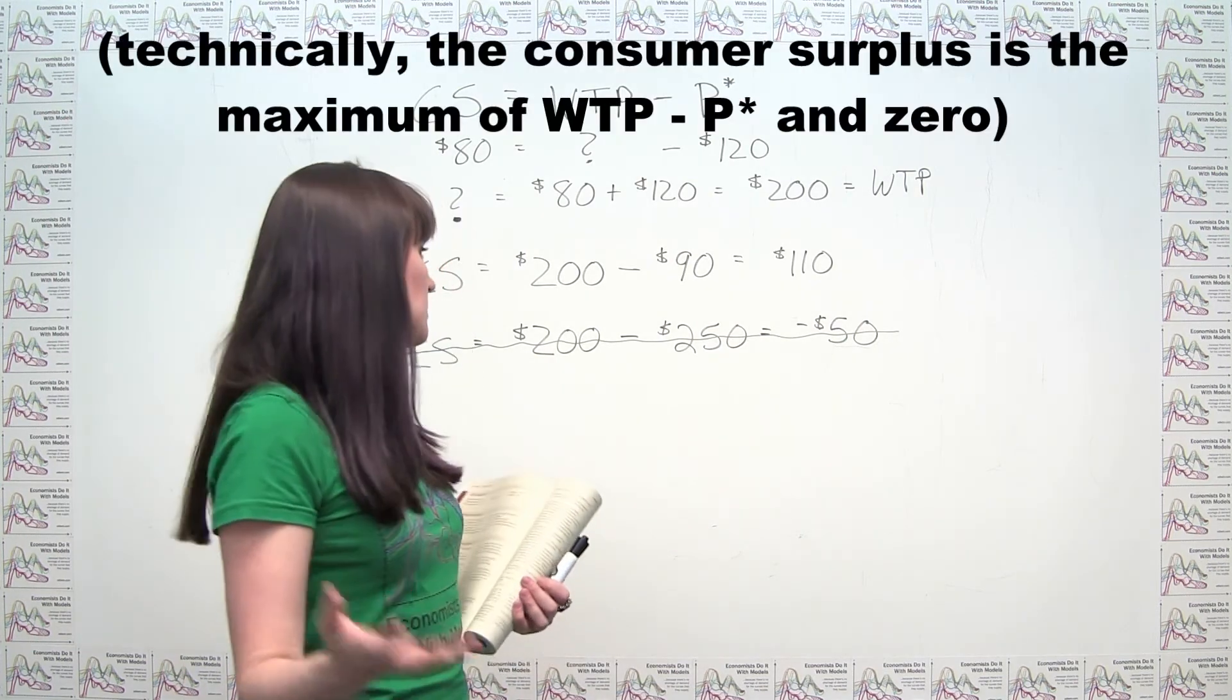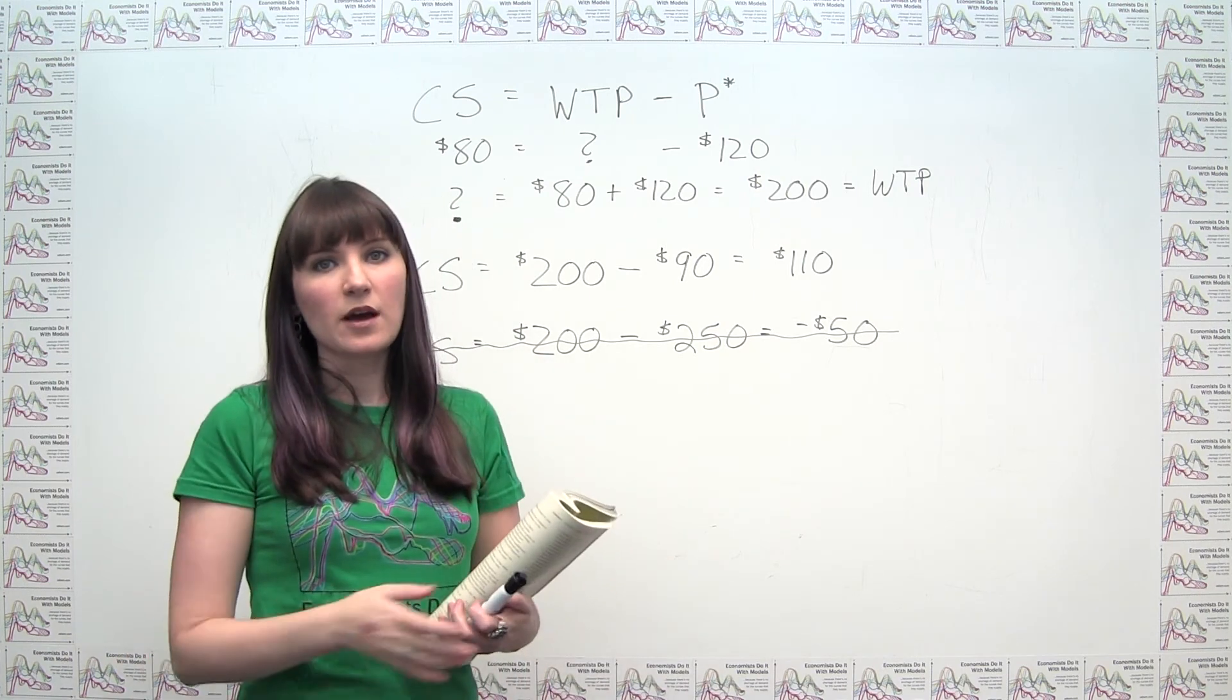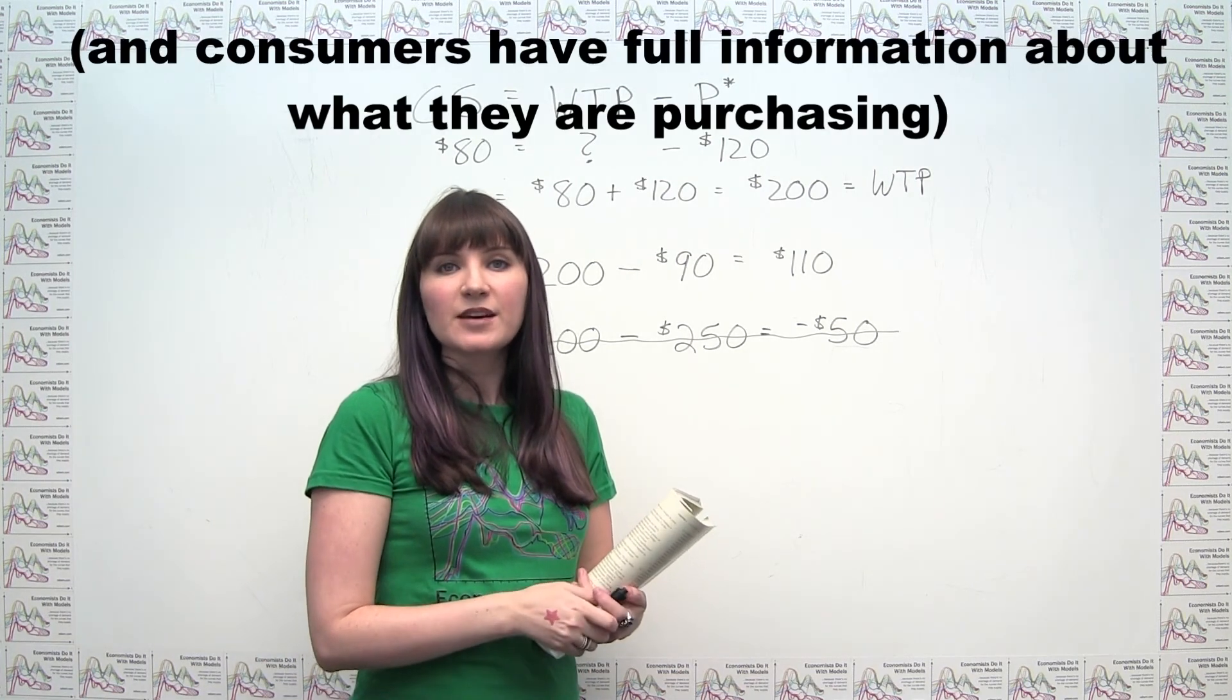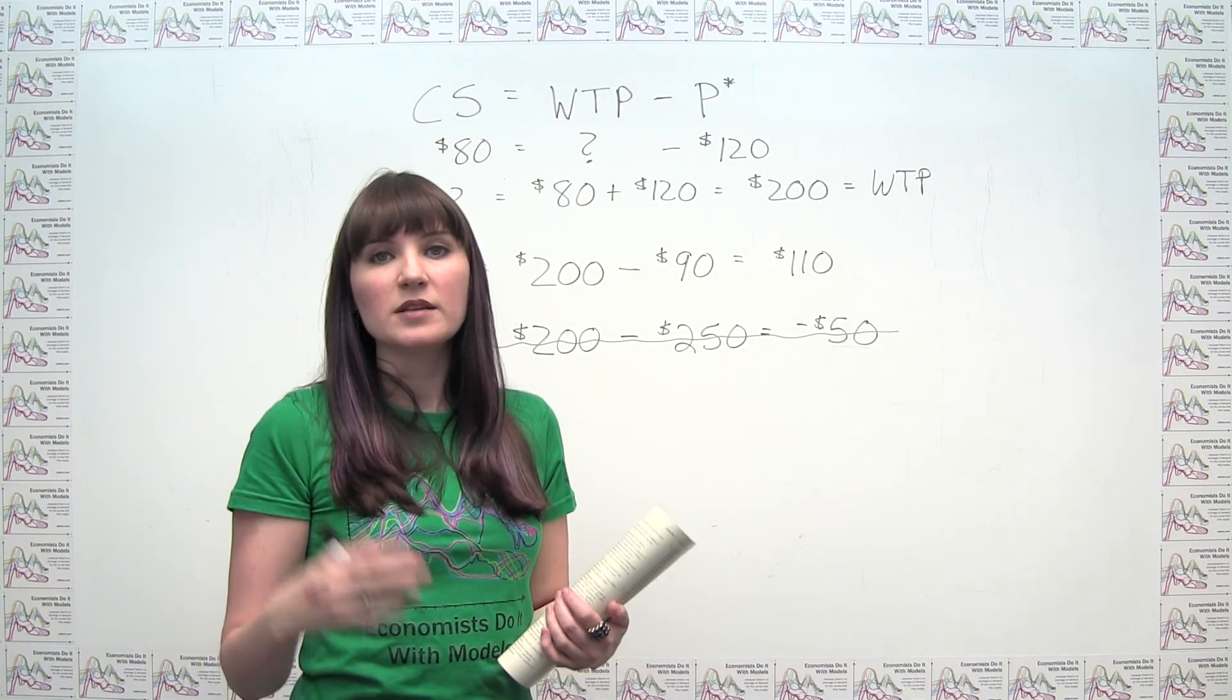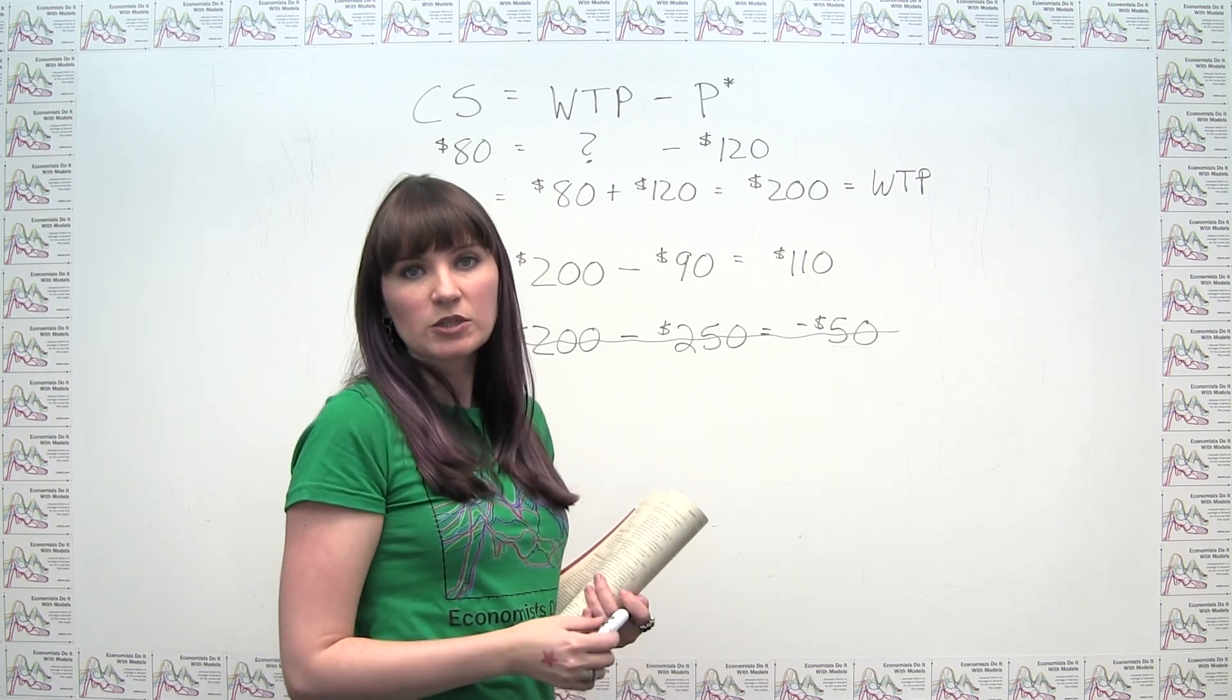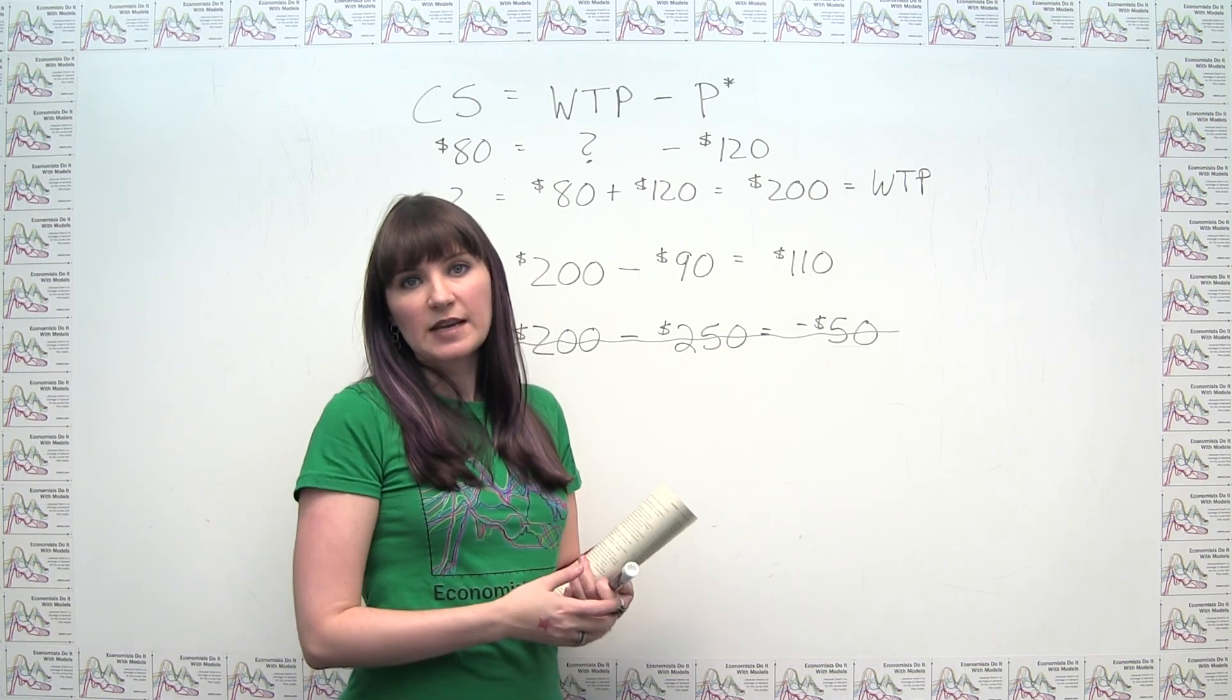And in general, we can say that because the vast majority of economic transactions are voluntary, we can say when economic transactions are voluntary, by definition, consumer and producer must both be getting non-negative surplus from those transactions. So really, the only way that somebody could be getting a negative surplus from an economic transaction is if someone were holding a gun to their head and forcing them to engage in an economic transaction that they didn't feel was actually in their best interest.